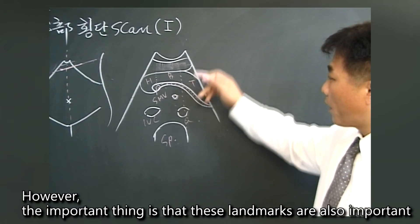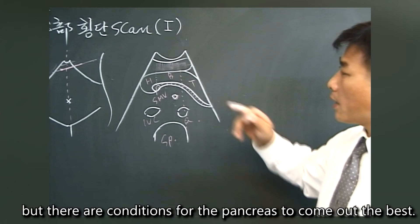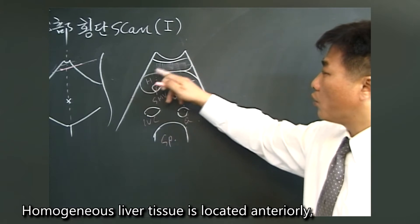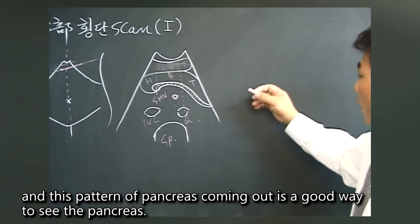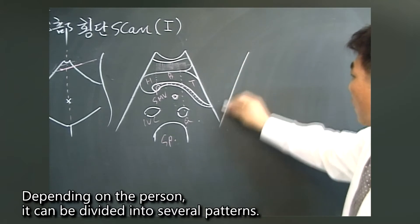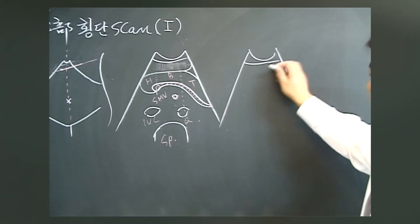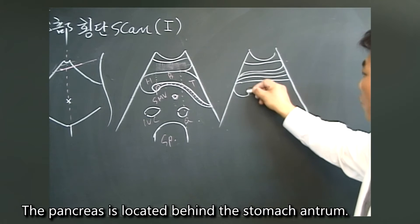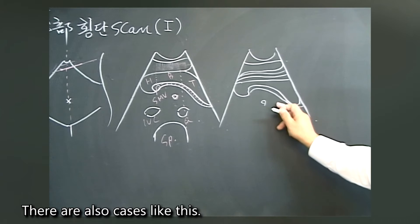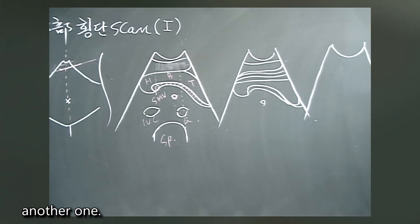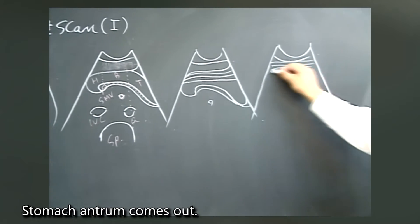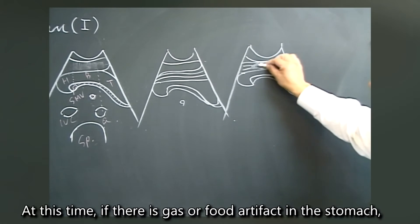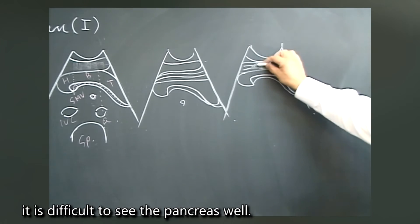However, the important thing is that these landmarks are also important, but there are conditions for the pancreas to come out the best. Homogeneous liver tissue located anteriorly with the pancreas visible behind it is ideal. Depending on the person, there can be several patterns. The liver comes out, then there is the stomach antrum, and the pancreas is located behind the stomach antrum. If there is gas or food artifact in the stomach, it is difficult to see the pancreas well.